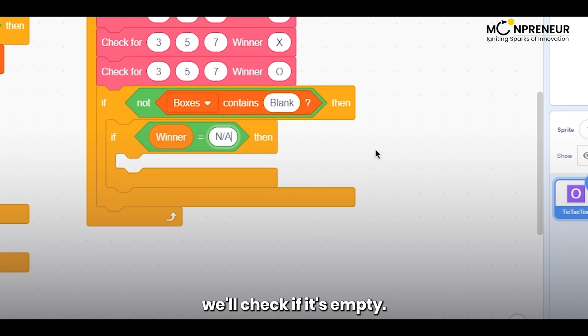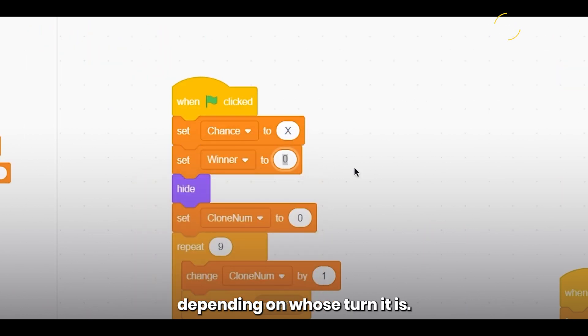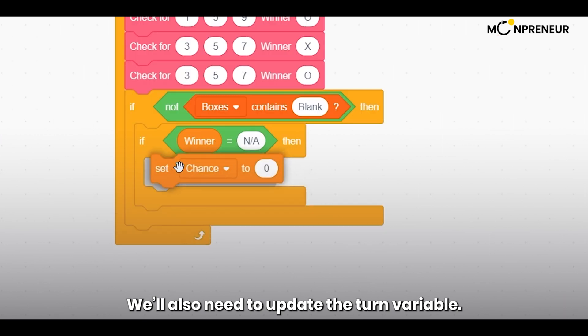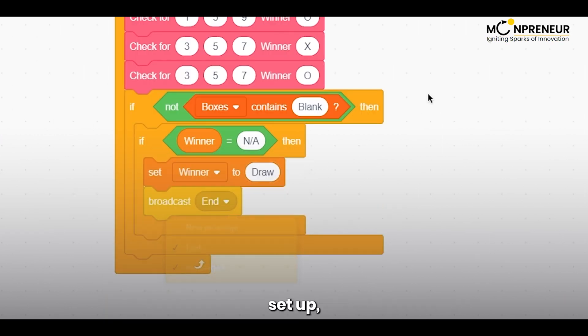When the player clicks on a cell, we'll check if it's empty. If it is, we'll place an X or O in the cell, depending on whose turn it is. We'll also need to update the turn variable. Once we have the basic interactivity set up, we'll need to add some logic to check for a winner.